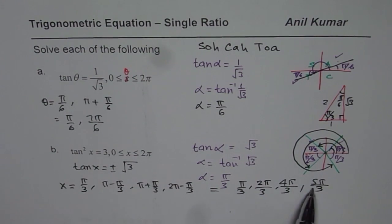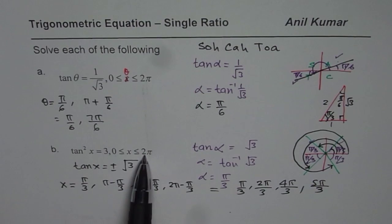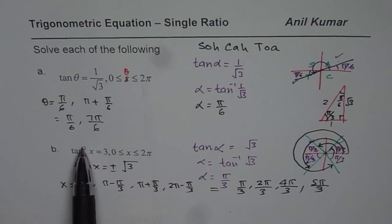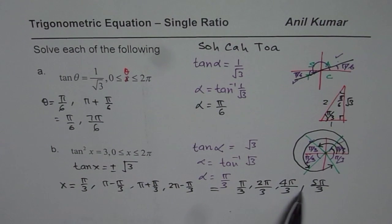And last step as you know is to check your answer. All these answers lie in the domain 0 to 2 pi. If you check with calculator you will get tan square of these angles as 3. So that completes our working with single ratios. You have dealt with examples which are sine, cosine or tan ratios. And now you are ready to do any trigonometric equation that may be linear, quadratic or any combination. Thank you and all the best.